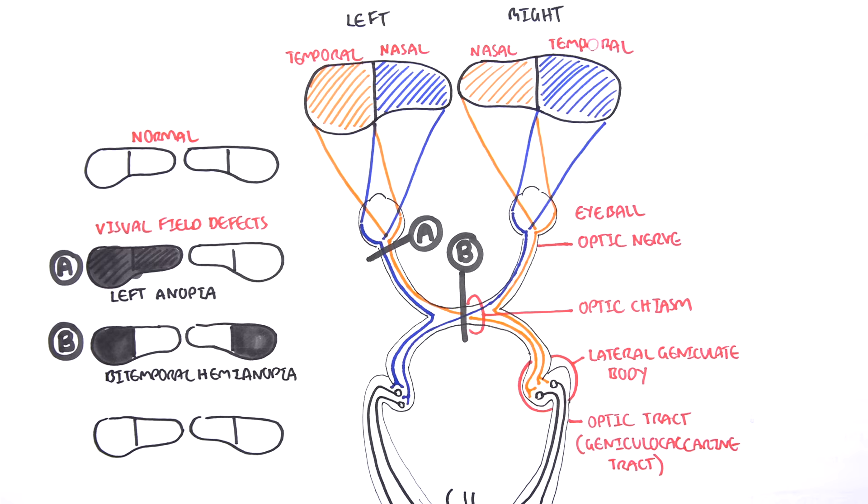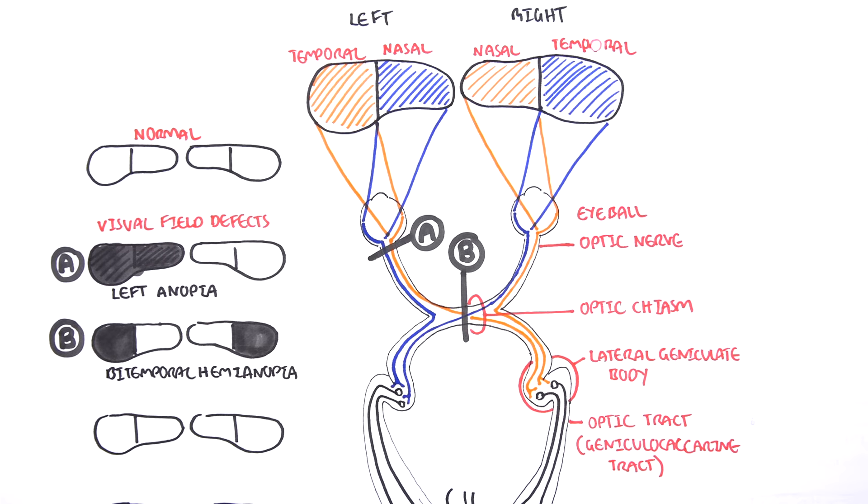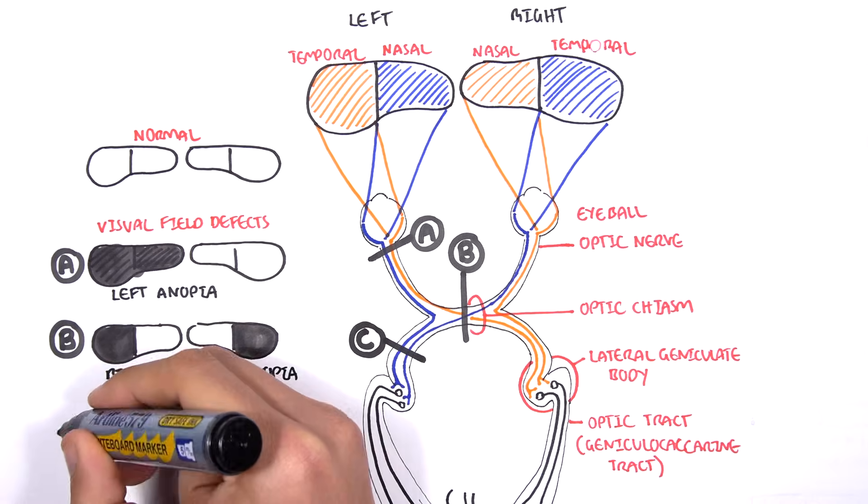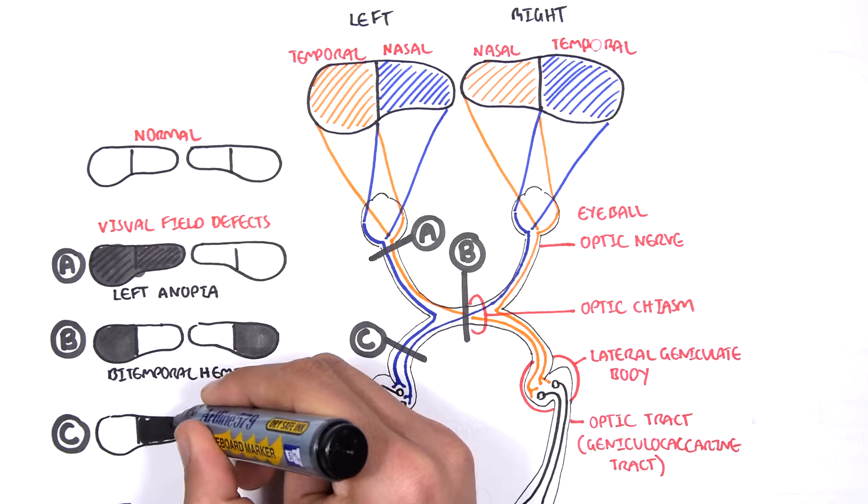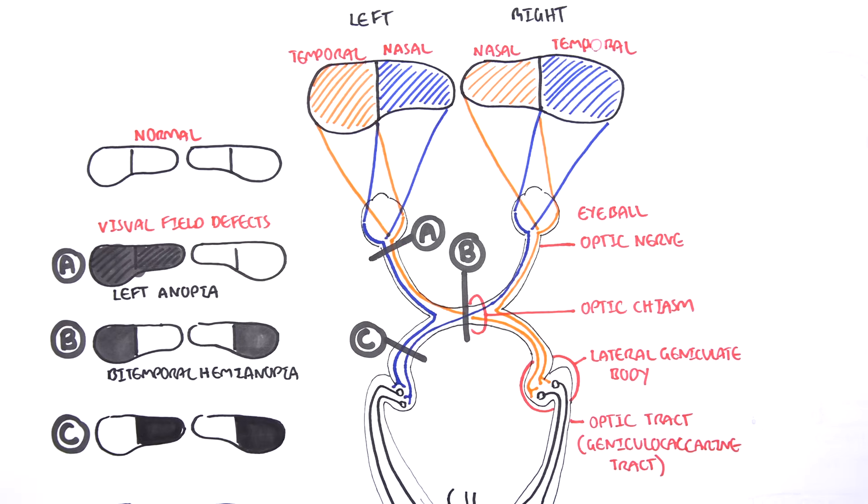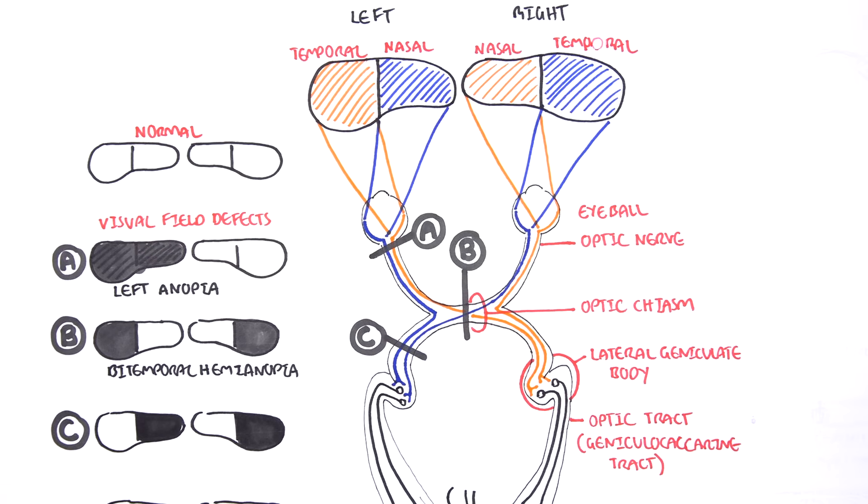If a lesion occurs here after the optic chiasm, we get loss of the visual fields that these blue nerves carried, which means we get loss of vision on the left nasal field and the right temporal field. This is called right homonymous hemianopia.